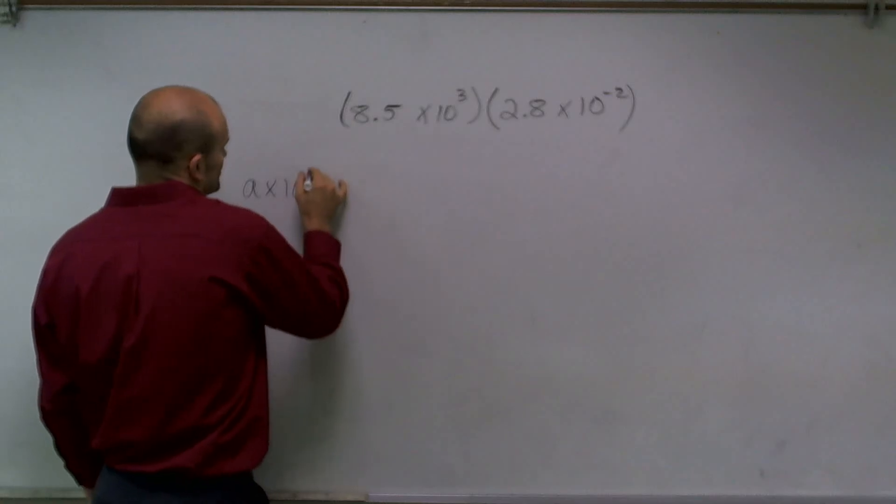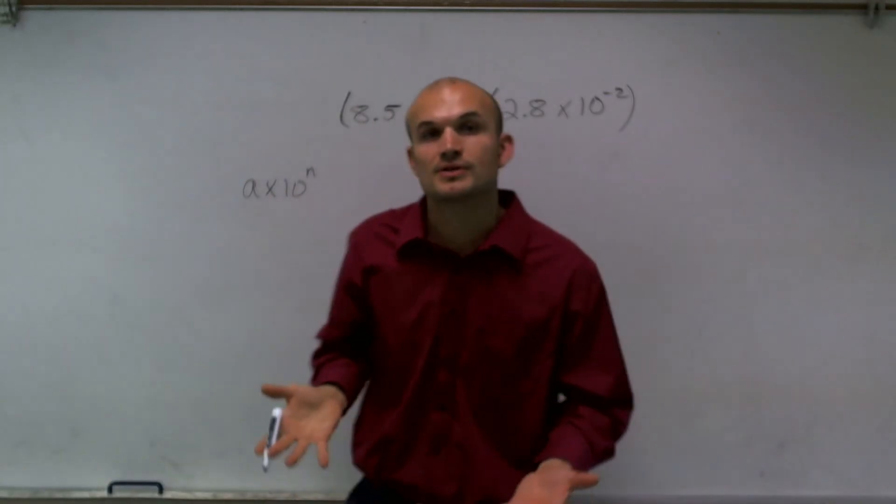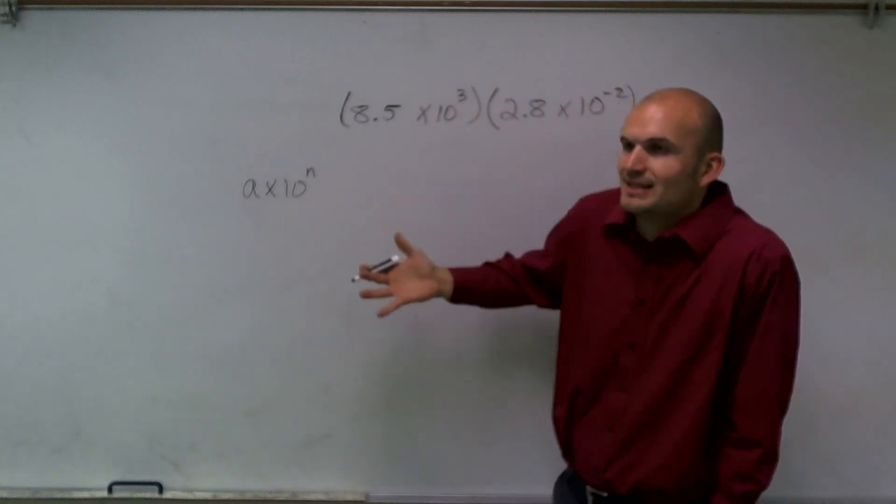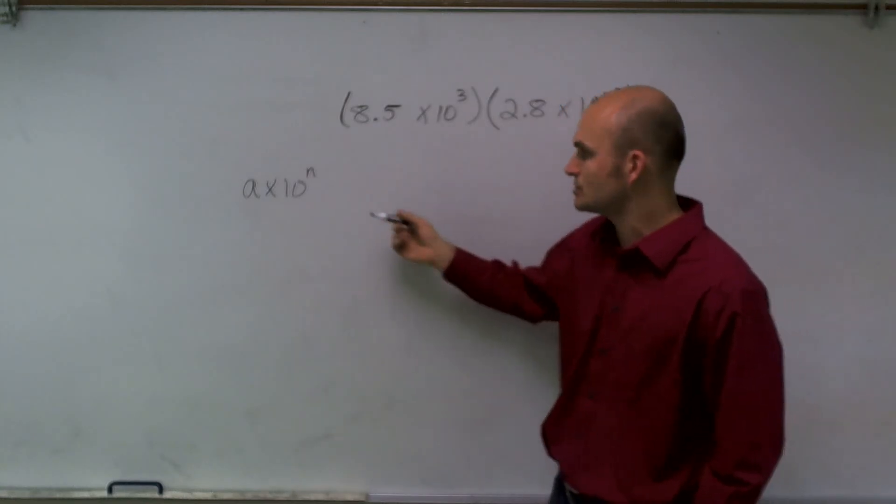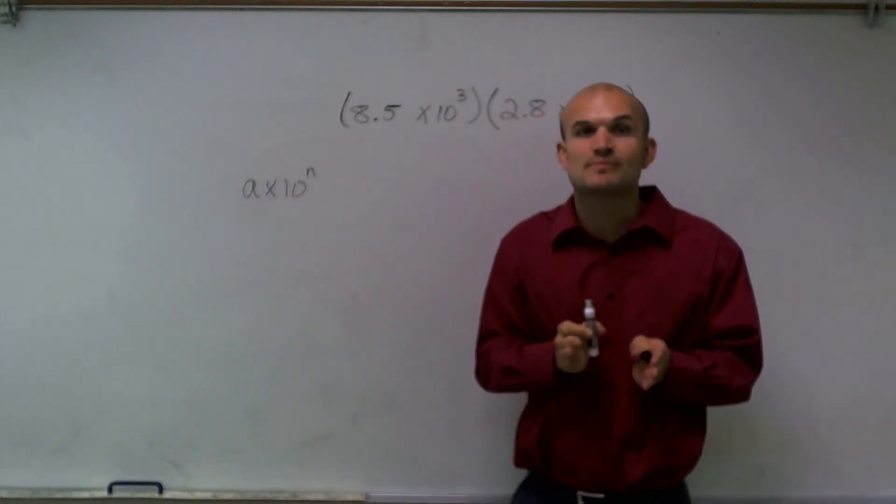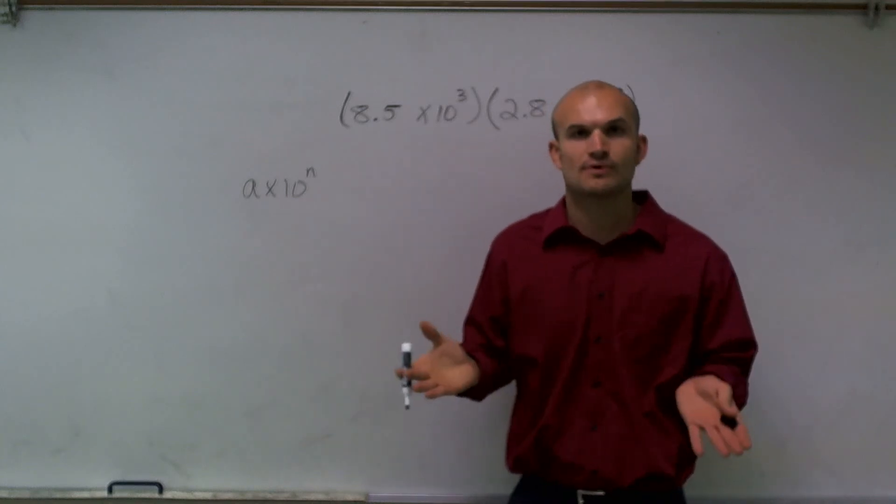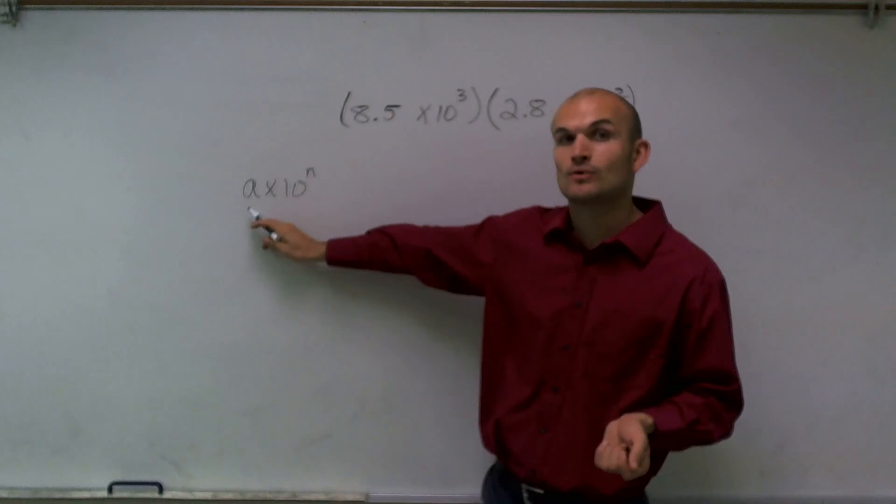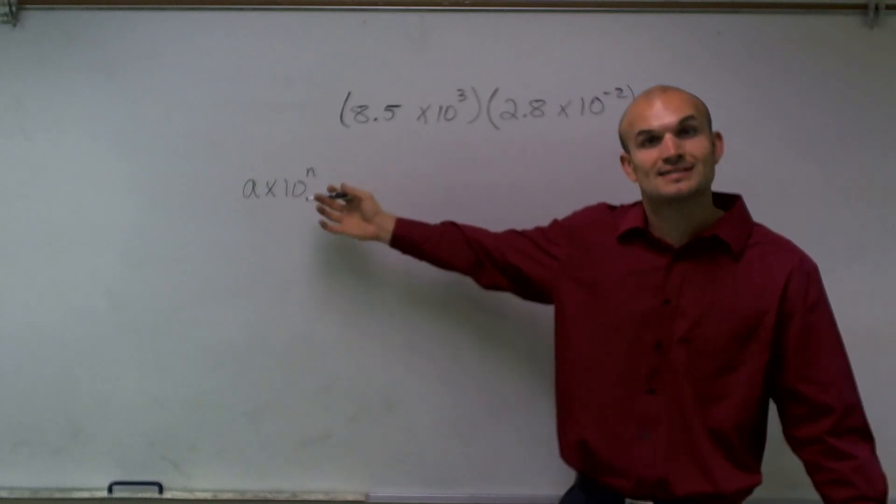We use scientific notation when we want to write very large or very small numbers that are too difficult to write in regular decimal notation. The way we write it is we have 'a', which is our number, and a has to be between 1 and 10. That's the rule we're going to follow: a has to be between 1 and 10 times 10 raised to n, where n is an integer.